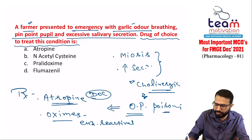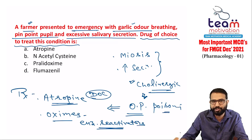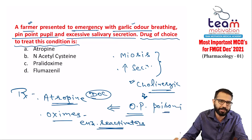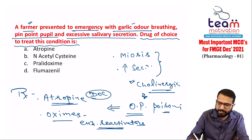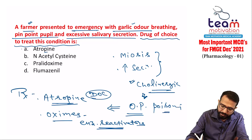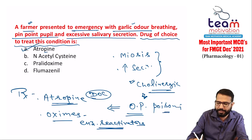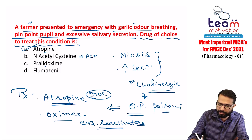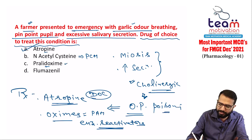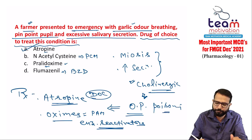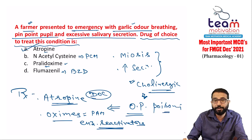Oximes like pralidoxime (PAM) can be used if the patient comes early — not late. Oximes are enzyme reactivators that can reactivate cholinesterase enzyme, which organophosphates inhibit. In this question: acetylcysteine is the antidote for paracetamol, pralidoxime (PAM) is an oxime, flumazenil is for benzodiazepine overdose. The answer is atropine.